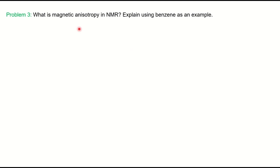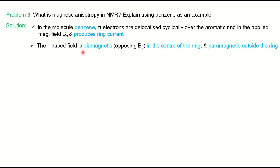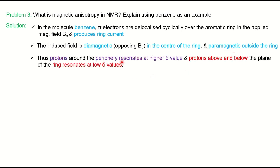The next question: what is magnetic anisotropy in NMR — explain using benzene as an example. In benzene, the molecules have a pi electronic cloud which is delocalized in the aromatic ring, and because of delocalization in the presence of a magnetic field, it produces a ring current. Ring current is a special term used only for aromatic compounds. This induced field is diamagnetic in the center of the ring while it is paramagnetic outside the ring. Protons in the periphery or outside the ring resonate at higher delta value because they fall in the paramagnetic zone, while protons above or below the plane of the ring fall in the diamagnetic zone and resonate at lower delta value.